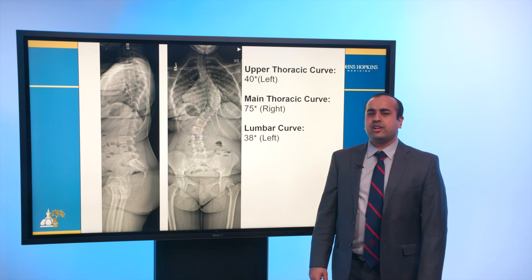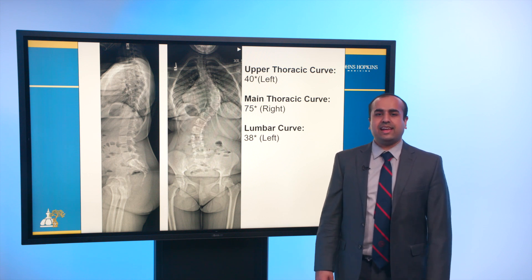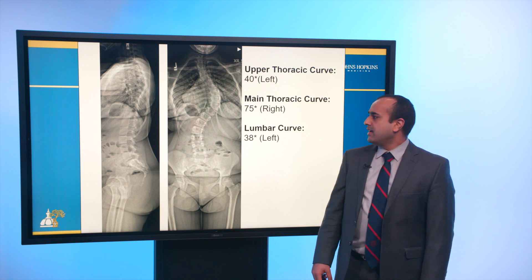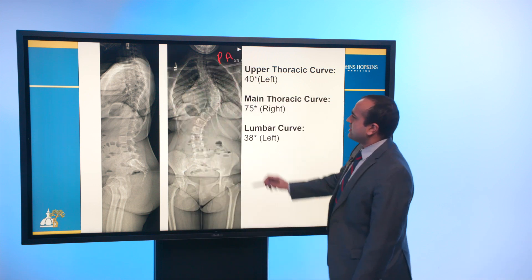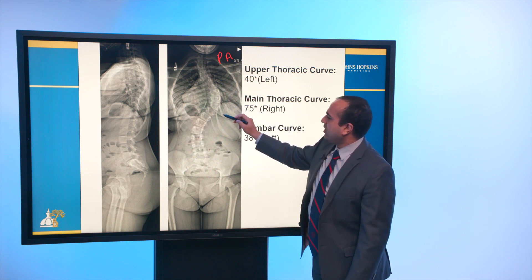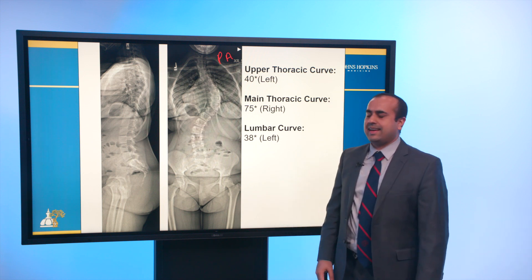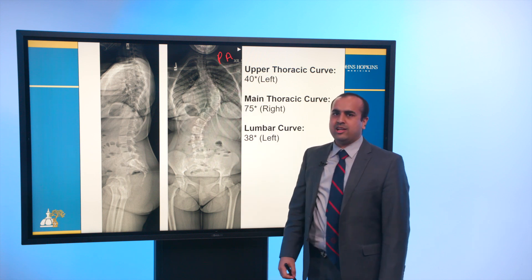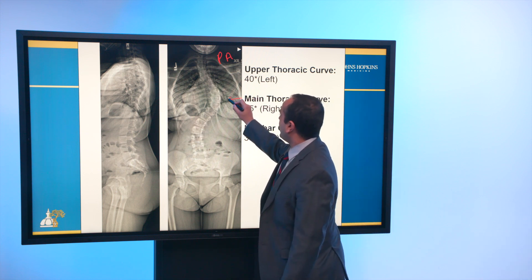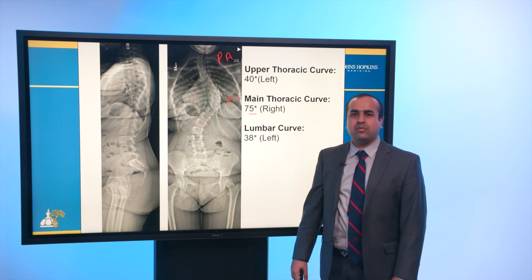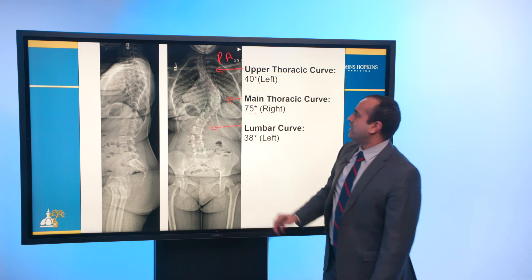As part of our examination, we also obtained radiographs. Every patient with suspected scoliosis should have a PA as well as a lateral radiograph. On the PA radiograph, there is an obvious large deformity, as well as two smaller curves in the upper thoracic and lumbar regions. It's important not to get focused only on the main curve, but also recognize compensatory or additional curves. The main thoracic curve was about 75 degrees to the right, the lumbar curve was 38 degrees to the left, and there was an upper thoracic curve of 40 degrees to the left.